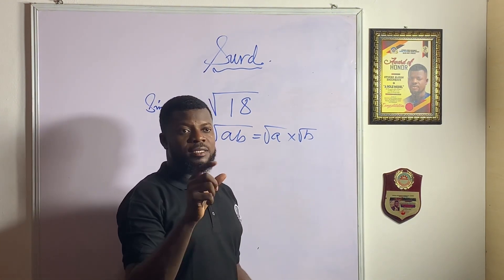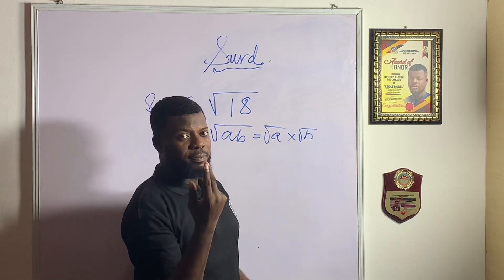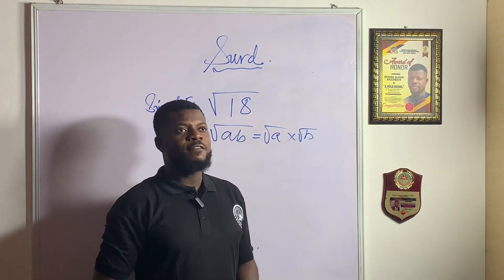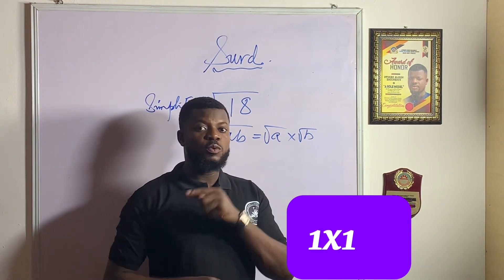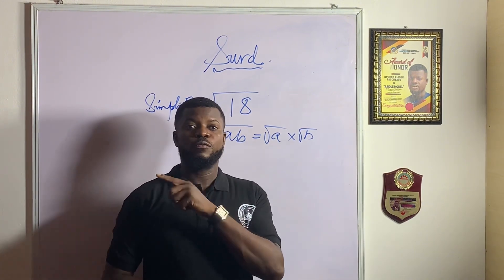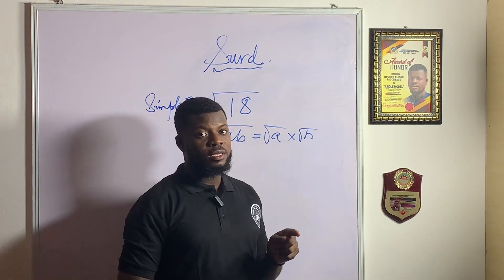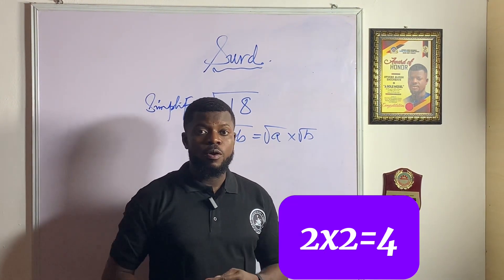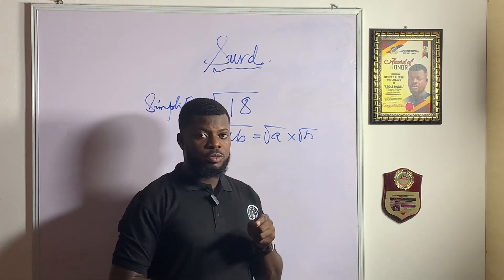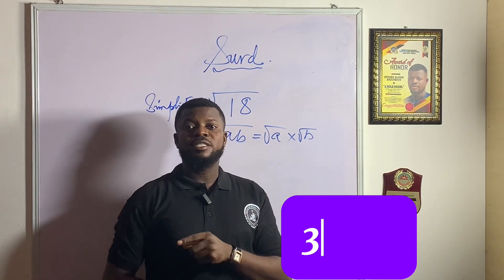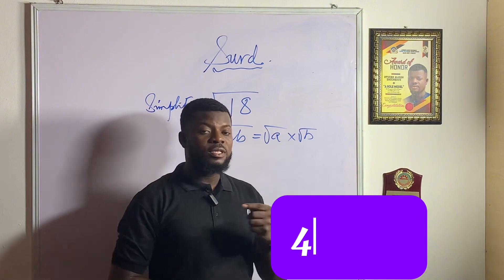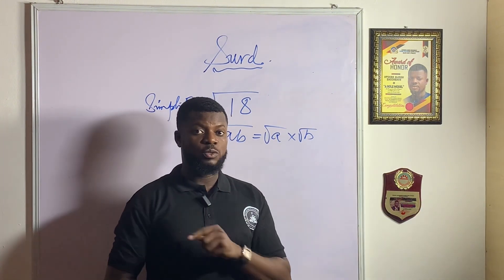Perfect squares are numbers that two equal numbers can multiply to produce. For example, 1 times 1 gives you 1, so 1 is a perfect square — the square root of 1 gives me 1. 2 times 2 gives you 4; the square root of 4 gives me 2. 3 times 3 gives you 9, so 9 is a perfect square. 4 times 4 is 16, so 16 is a perfect square.